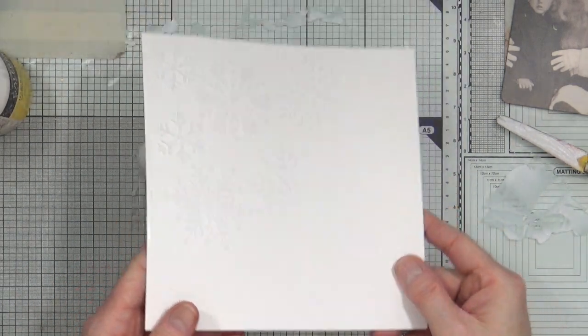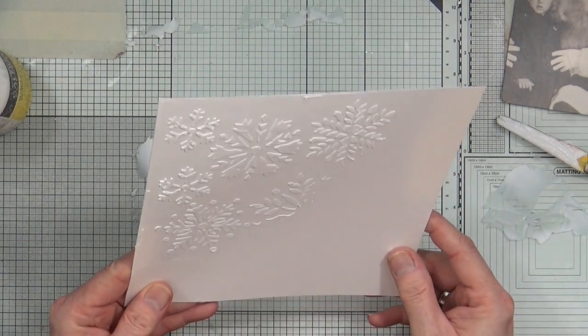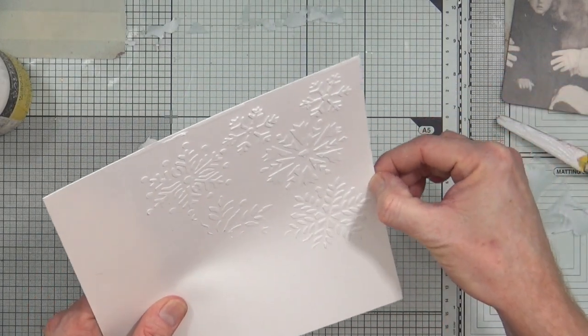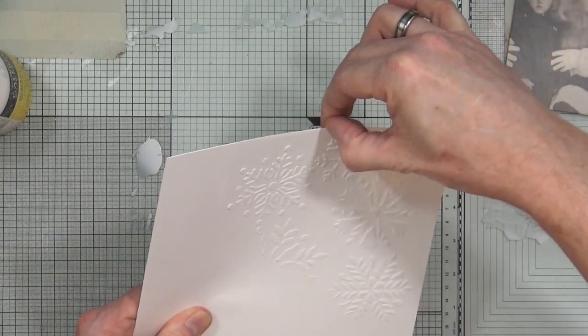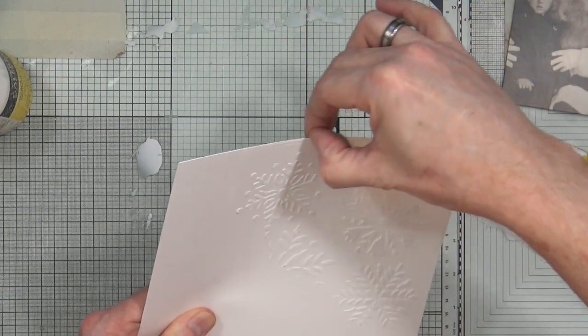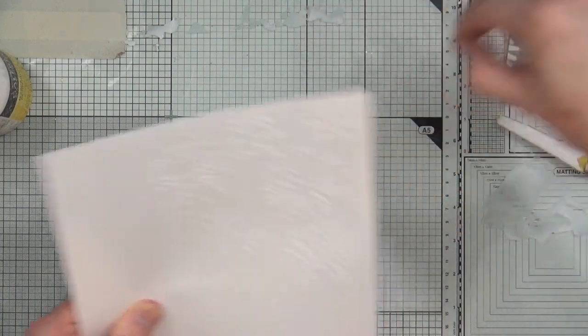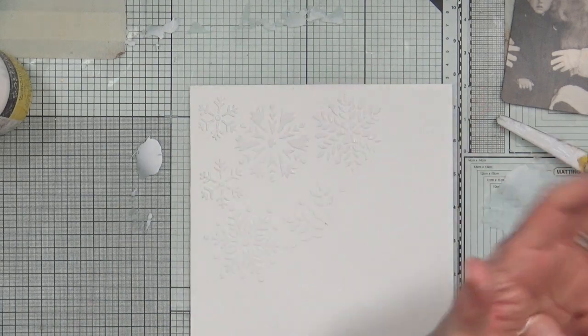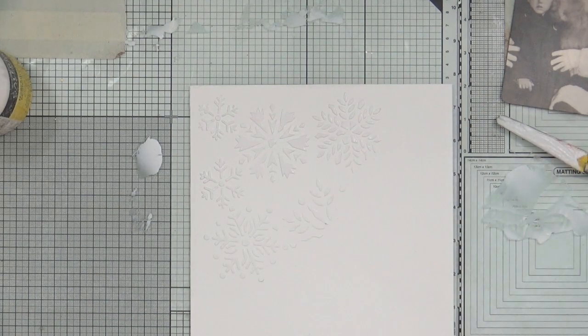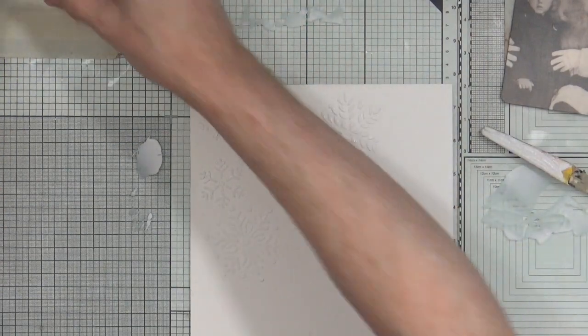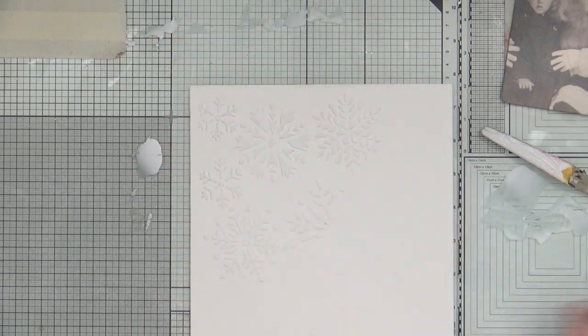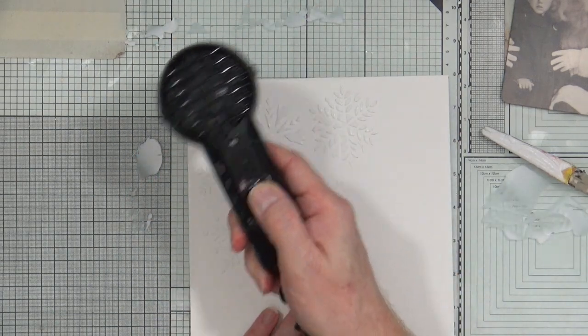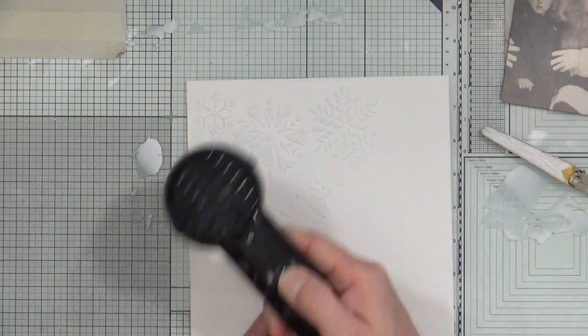I just peel that off and you can see that lovely texture that we have on the page. I can just remove a little bit from the top around the edges. It's going to be kind of a wintery Christmasy themed page, but instead of using traditional Christmasy colors I'm going to go for cool blues with a pop of red. So I need to get that dry, so I'm going to grab my heat gun and I'll be right back when it's done.